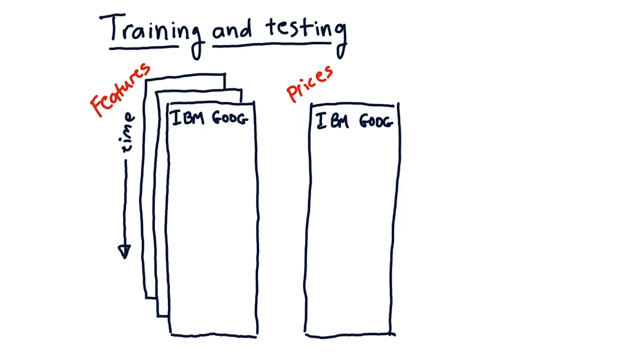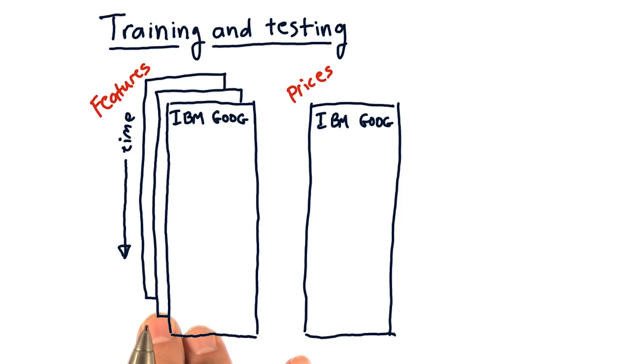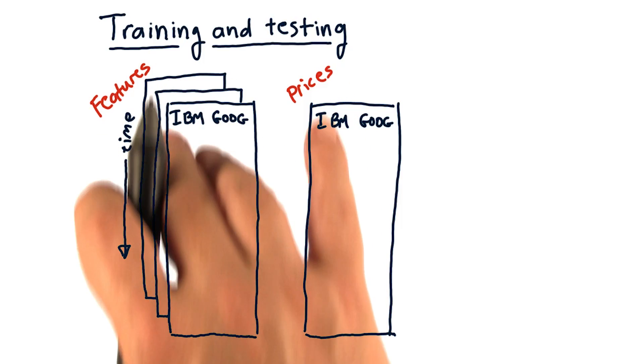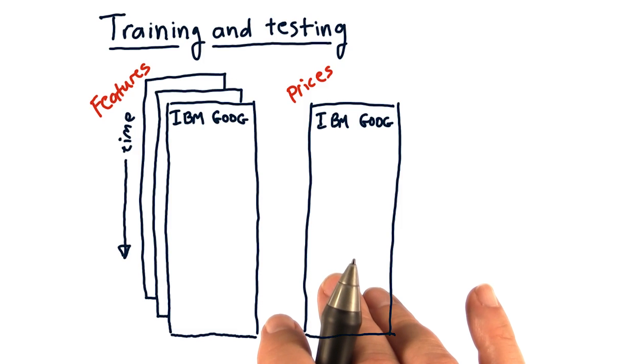Consider now the data that we're going to use. We're going to have features that we've computed. These are things like Bollinger Bands and Momentum and Price Change and things like that. We're going to use these features to try and predict prices or price changes.